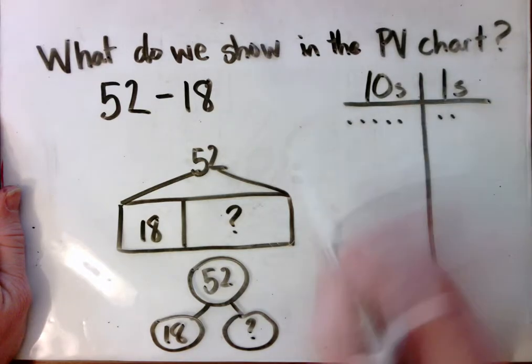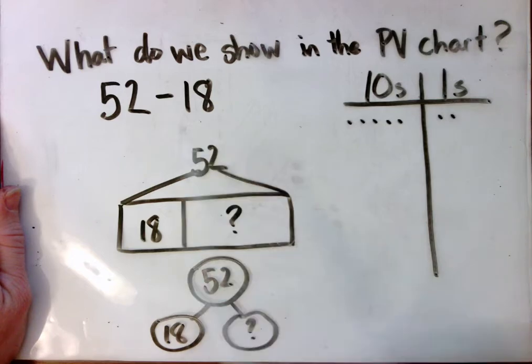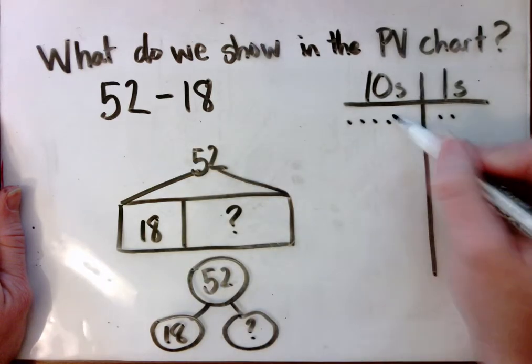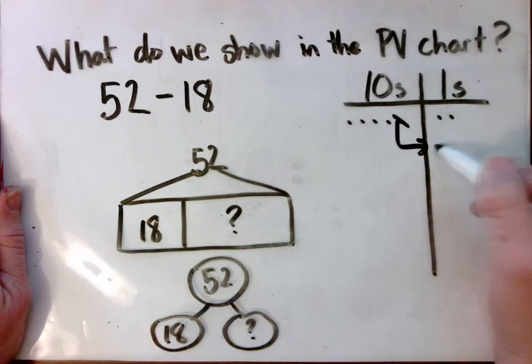We have to make sure that we can take 8 ones and 1 ten, which of course we can't. So we're going to have to unbundle or trade 1 ten for 10 ones.